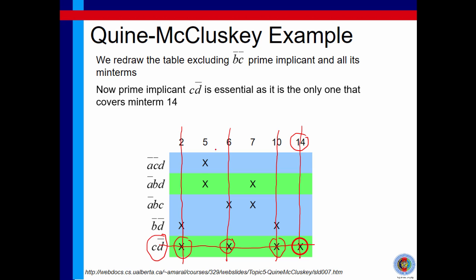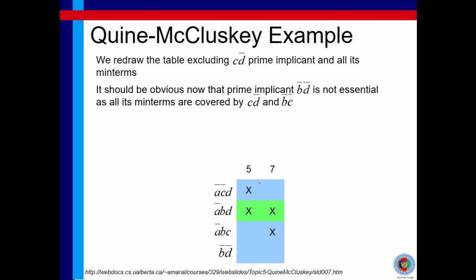In the next stage of table, you should predict that we will only have columns of minterm 5 and 7.